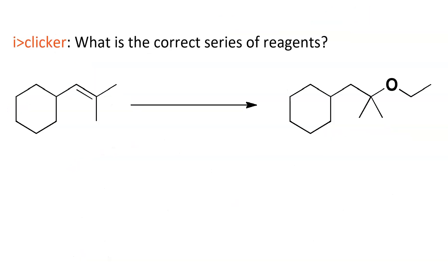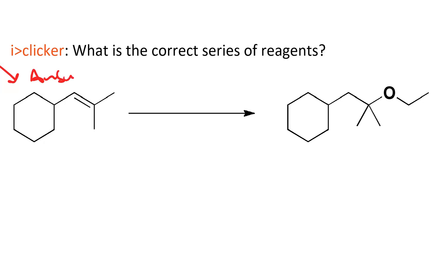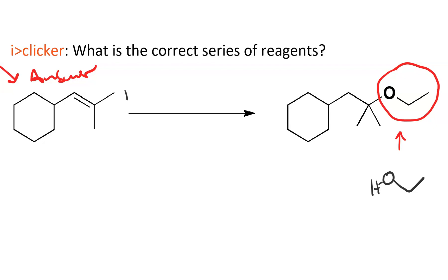Here's an exercise for you to try. Pause while you work it, then come see my answer. What we've done is added an ethoxy group Markovnikov on the alkene, so we want to do alkoxymercuration-demercuration, and the alcohol we use is ethanol. For the alkoxymercuration step, we use mercuric acetate (Hg(OAc)2) and ethanol, then do the demercuration with sodium borohydride.